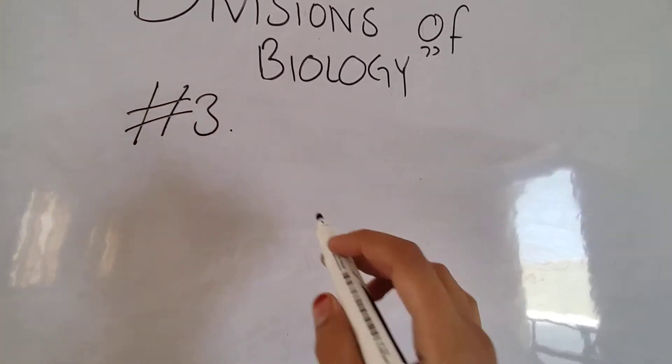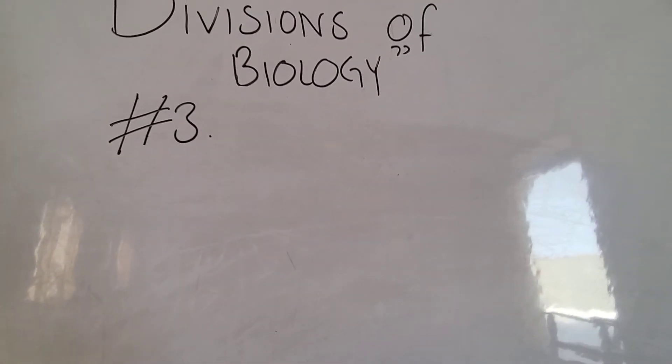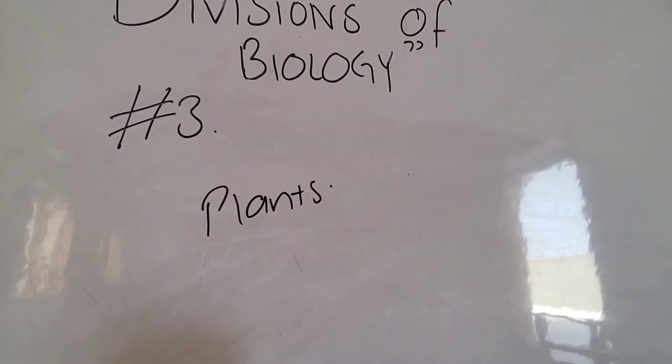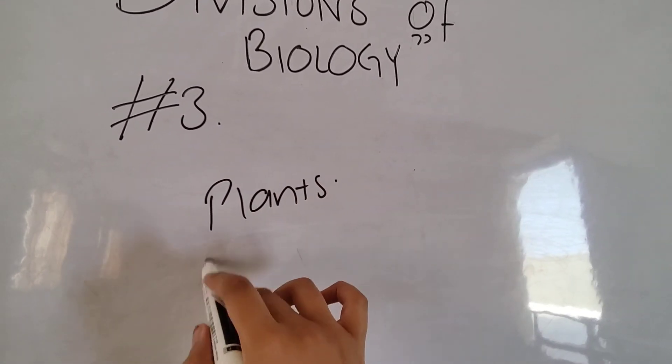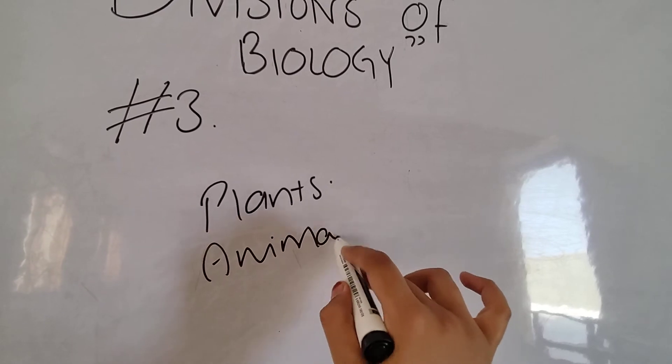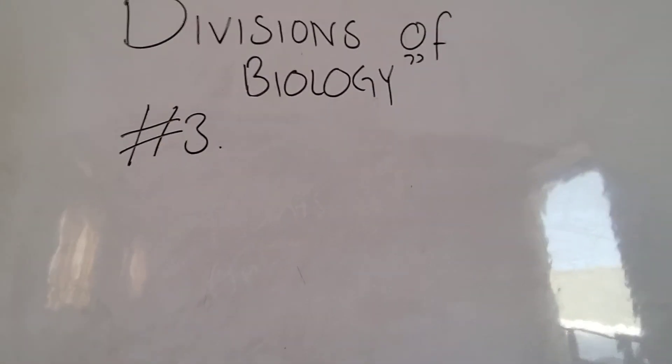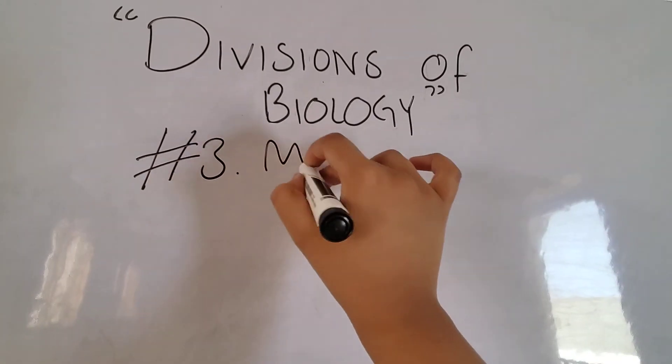But you know these are visible things. Like we studied about plants which can also be seen with our eyes. We are going to be studying about animals which can also be seen with naked eye. But let's discuss the third term which is Microbiology.